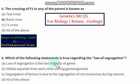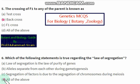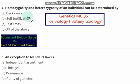Which of the following statements is true regarding the law of segregation? The law of segregation is the law of purity of genes. Alleles separate from each other during gametogenesis — that is called segregation. Segregation of factors is due to segregation of chromosomes during meiosis. All three options are correct, so the right option is option D: all of the above.